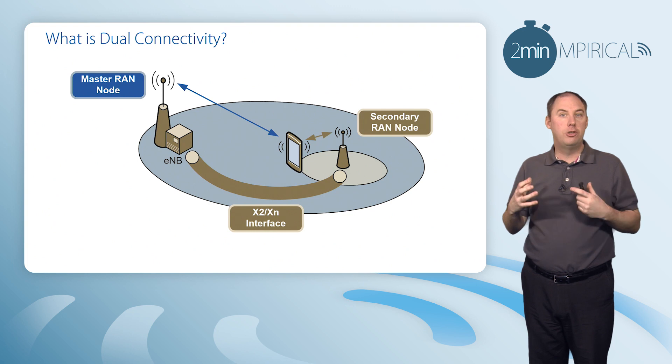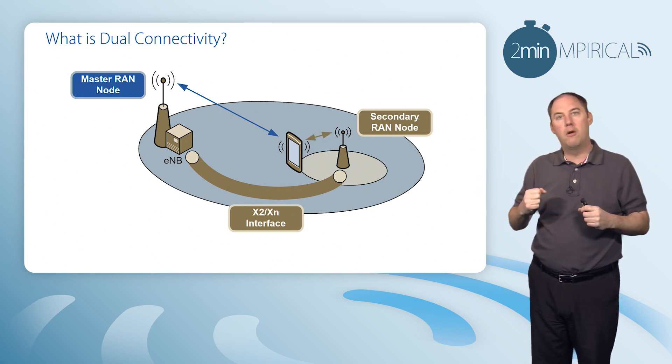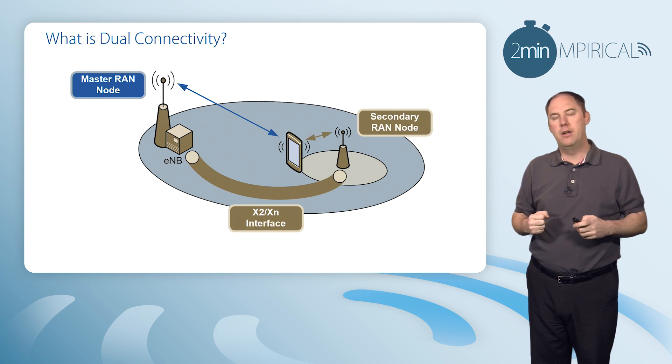So the mobile is effectively getting two streams: one from the master RAN node and one from the secondary RAN node.